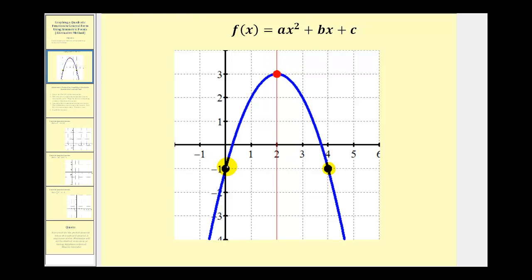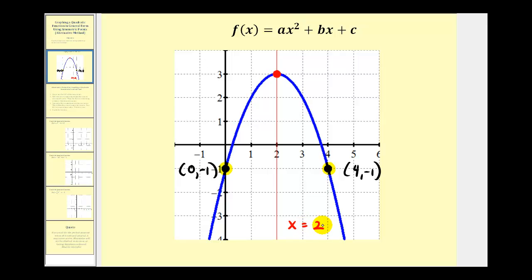Looking at our graph, notice how this point has coordinates (0, -1) and this point has coordinates (4, -1). Symmetric points on a parabola will always have the same y-coordinates, and if we take the average of the x-coordinates, we can find the equation of the axis of symmetry. Here, zero plus four divided by two equals two, so the equation of the axis of symmetry is x = 2, which means the x-coordinate of the vertex will also be two, and then we can find f(2) to find the y-coordinate of the vertex.